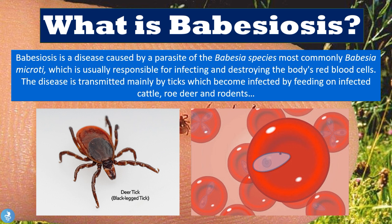From this definition of Babesiosis, we get that it's most commonly caused by the parasite Babesia microti. When it enters the body, it destroys the body's red blood cells — red blood cells that help carry oxygen throughout our body. This destruction is a process called hemolysis, which means to break down a red blood cell, and it goes on to give the patient a hemolytic anemia, which we'll discuss further down the line.